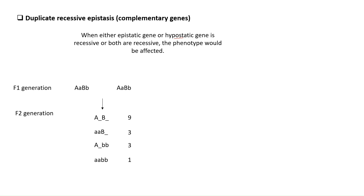In the F1 generation cross, we get the F2 generation ratio of 9:3:3:1. The 9 is when both characters have at least one dominant allele. The first 3 is when gene A is recessive and B is dominant. The second 3 is when A is dominant and B is recessive. The 1 is when both characters are in a recessive state. This is the standard F2 ratio in a dihybrid cross.